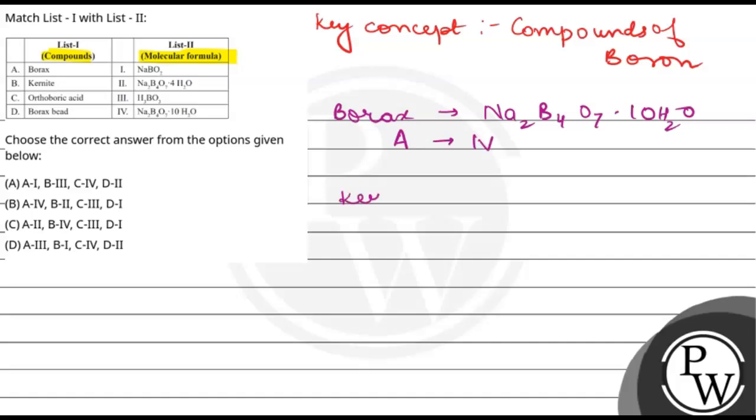Next we have kernite. So kernite formula is Na2B4O7, but water of hydration is 4. That means B option is 2.